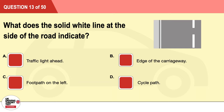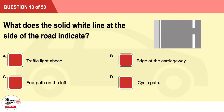Question 13: What does the solid white line at the side of the road indicate? A: Traffic light ahead. B: Edge of the carriageway. C: Footpath on the left. D: Cycle path. The correct answer is B: edge of the carriageway.